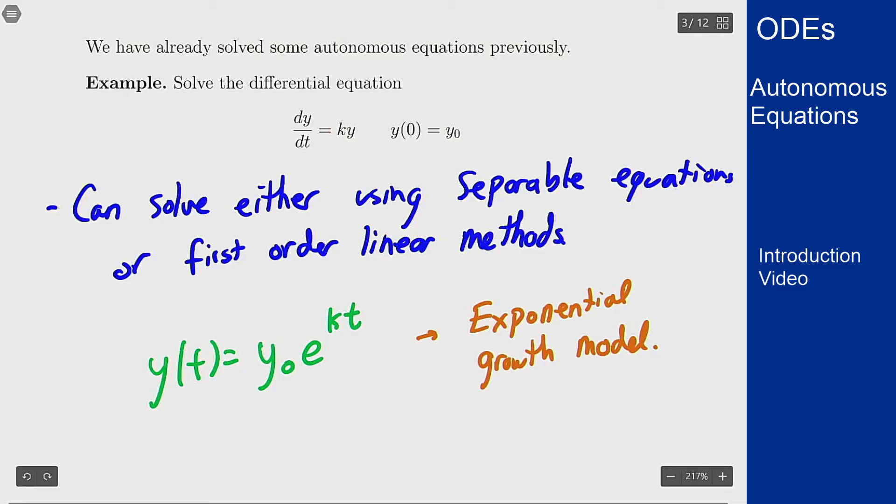only depends on y. It has no explicit t dependence and as you notice our answer still does depend on t as it would because this derivative here is still in t. But the equation itself has no t's over on this side. That's what it means to be an autonomous equation.